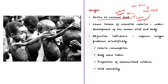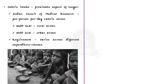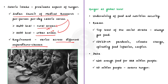This is exactly why objective indicators are used to capture human problems scientifically rather than subjective articulation by individuals. Some objective indicators include calorie consumption, body mass index, the proportion of malnourished children, and childhood mortality. Among these, calorie intake refers to the most approximate aspect of hunger. The Indian Council of Medical Research recommends per person per day calorie norms of 2400 kilocalories for rural areas and 2100 kilocalories for urban areas. However, per capita calorie intake varies considerably across different expenditure classes, as low-income families can afford fewer calories.